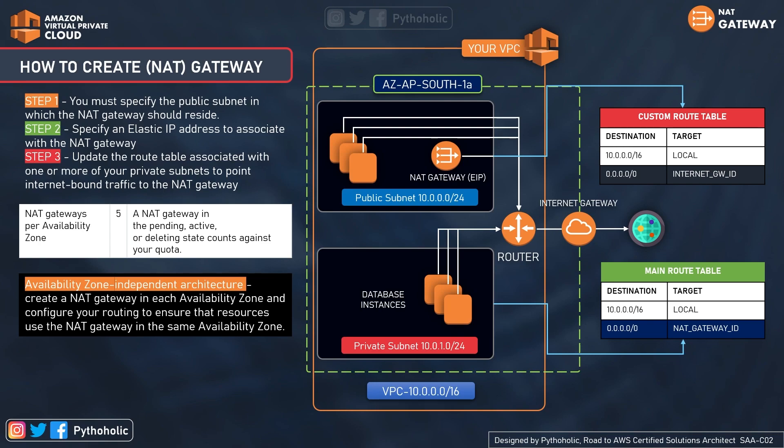A NAT Gateway in the pending, active, or deleting state counts against your quota. For availability zone independent architecture, AWS recommends creating a NAT Gateway in each availability zone and configuring routing so that resources use the NAT Gateway in the same AZ — otherwise you may have a single point of failure.